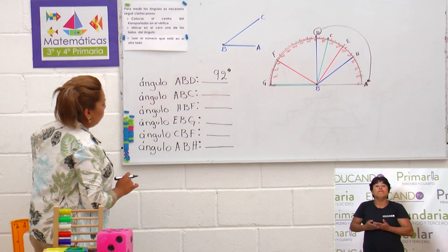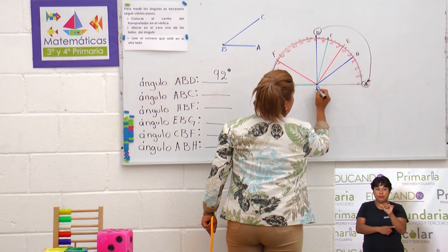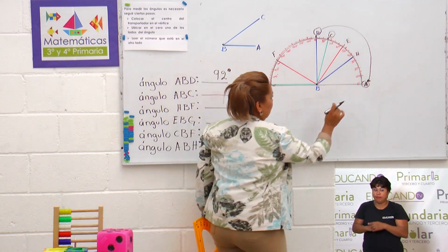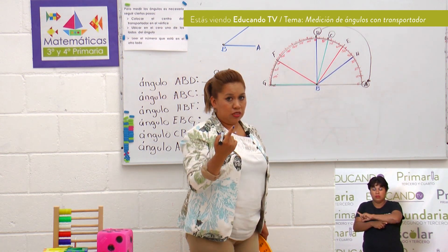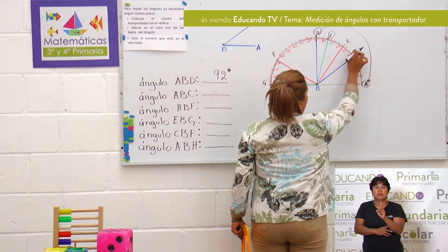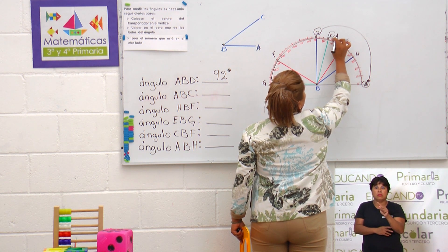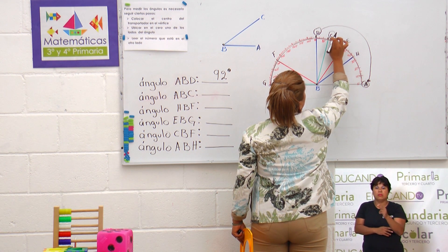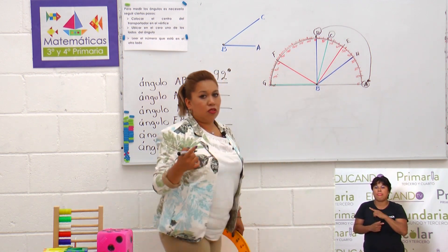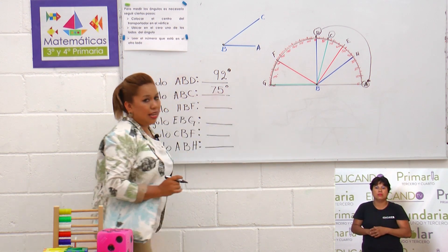Muy bien. Ahora vamos a medir el ángulo A B C. A, B, C. Según esto, como ya tenemos graduado aquí el transportador, solamente es cuestión de contar. Por ejemplo: diez, veinte, treinta, cuarenta, cincuenta, sesenta, aquí serían setenta, setenta y uno, setenta y dos, setenta y tres, setenta y cuatro, setenta y cinco. Entonces estamos nosotros hablando de un ángulo de setenta y cinco grados.